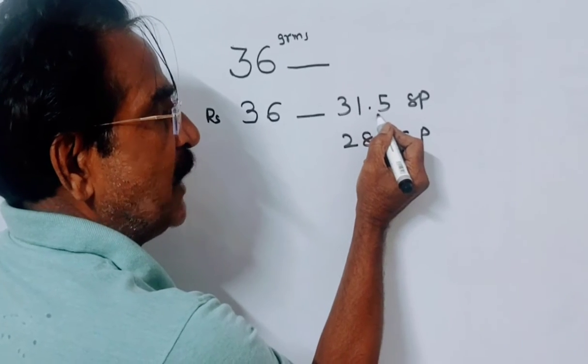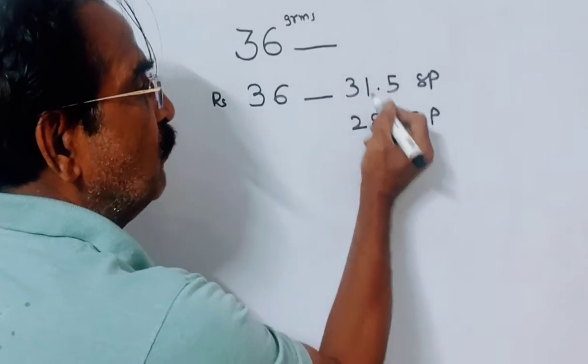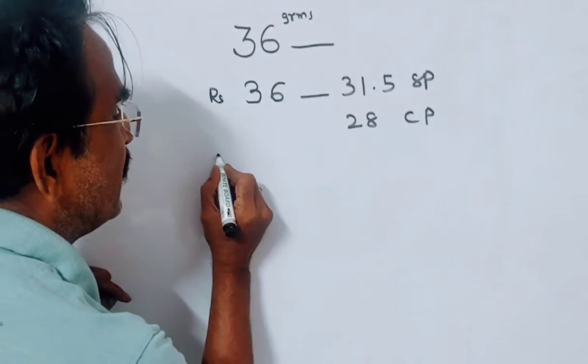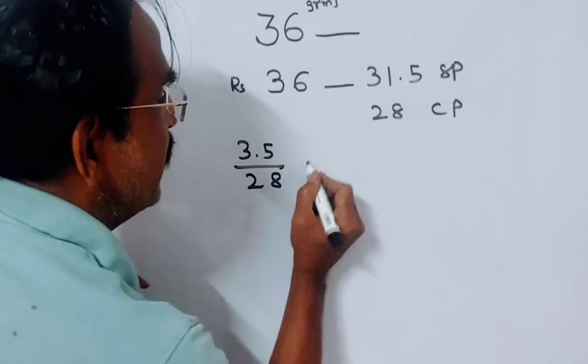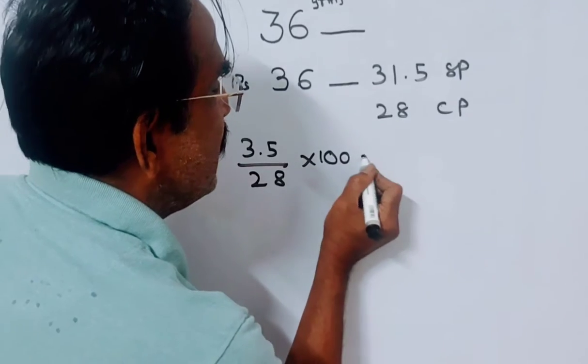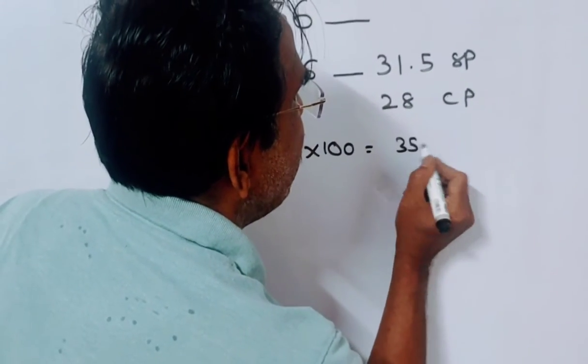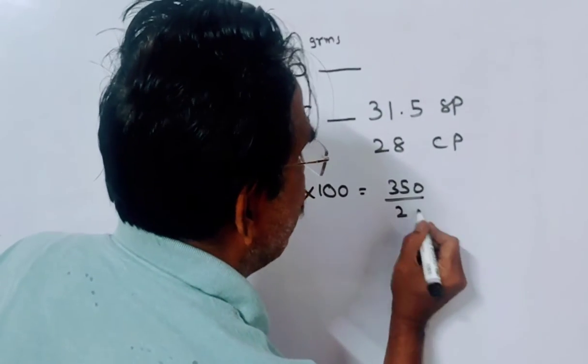31.5 is his selling price. Friends, profit is equal to 3.5. Profit percent is equal to profit upon cost price into 100. This is equal to 3.5. This is equal to 350 by 28.